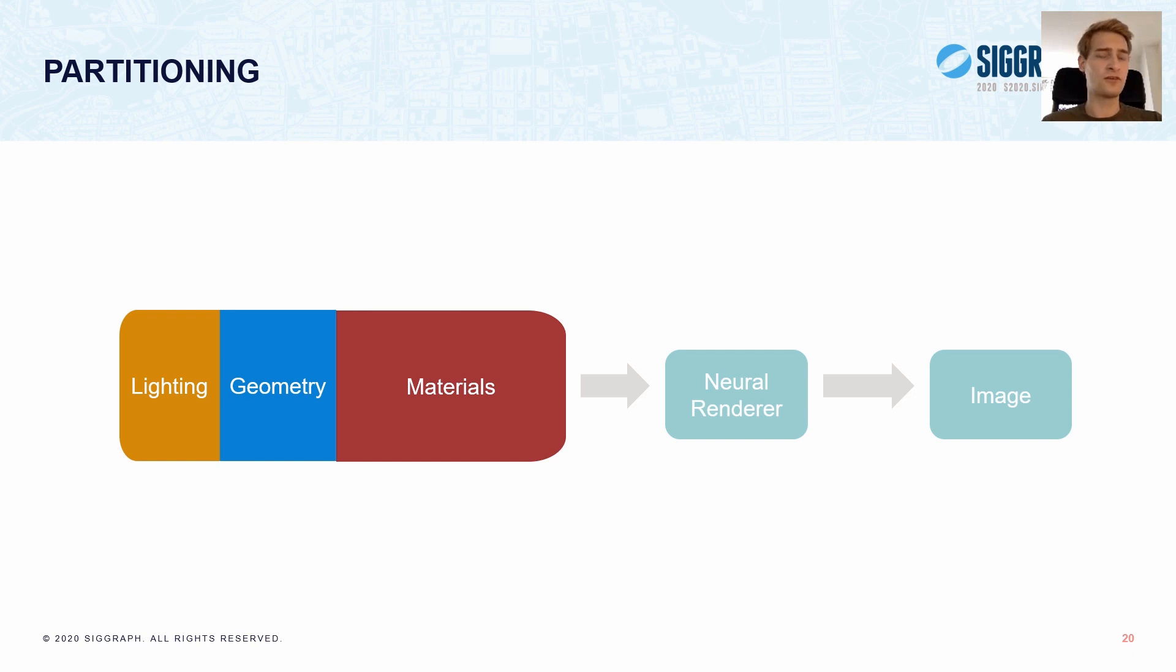Then, over the training duration, we sharpen the boundaries such that they converge to hard edges. Now, with this approach, datasets that require more material information will result in networks with larger material partitions. And similarly, if more lighting information is required, we'll end up with a larger lighting partition. Such flexibility is desired, especially in our setup, where the neural scene representation complements the geometry information in the G-buffer.